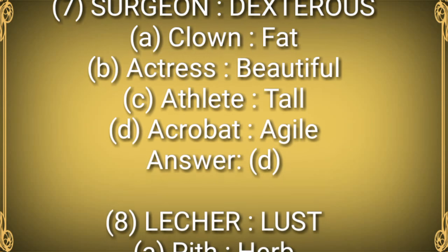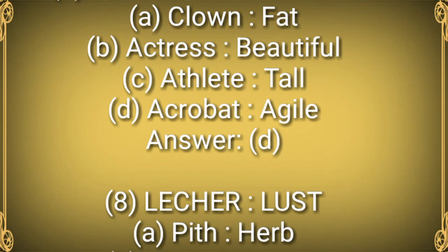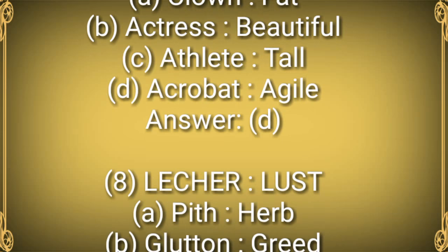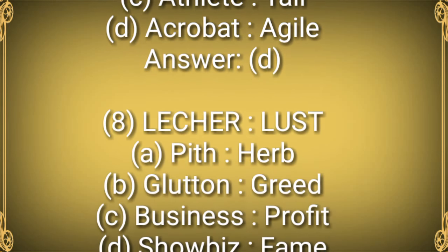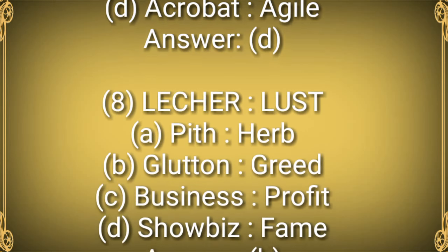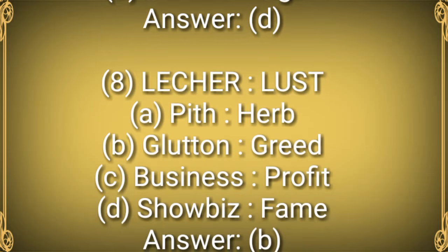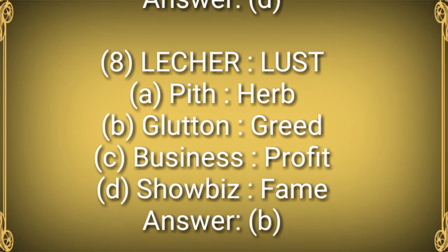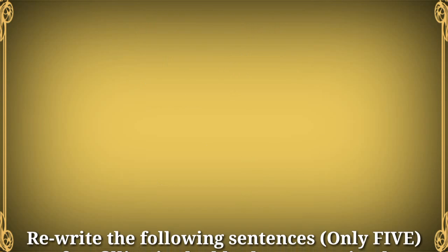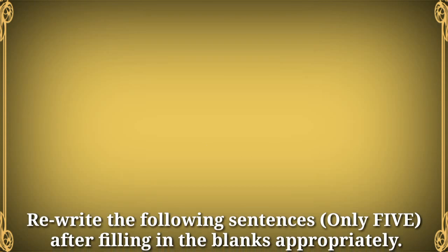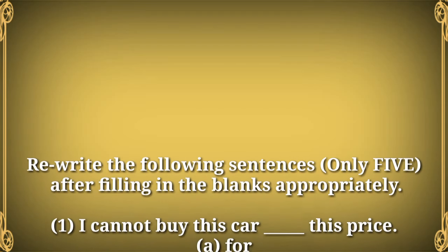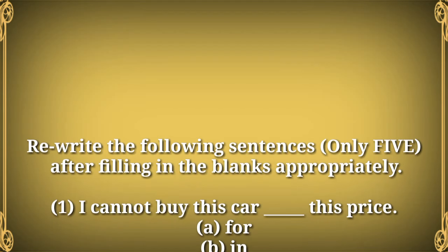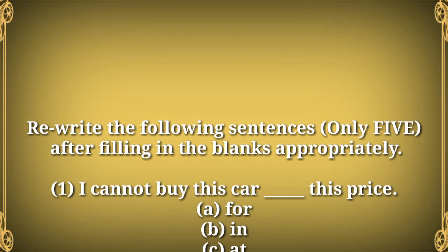Question 7: SURGEON : DEXTEROUS. Options: A) Clown : Fat, B) Actress : Beautiful, C) Athlete : Tall, D) Acrobat : Agile. Answer: D. Question 8: LECHER : LUST. Options: A) Pith : Herb, B) Glutton : Greed, C) Business : Profit, D) Showbiz : Fame. Answer: B.